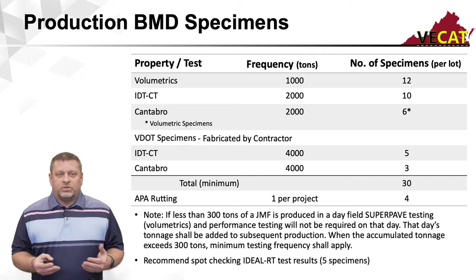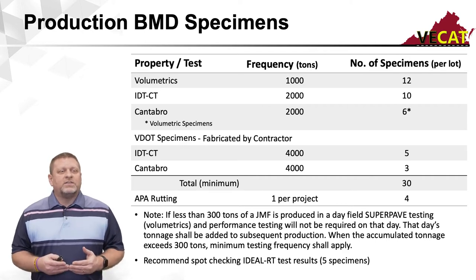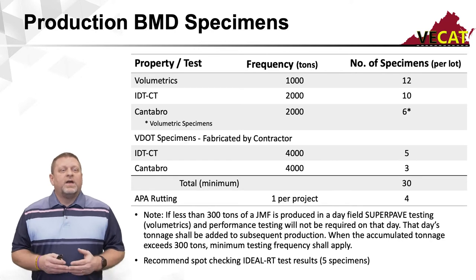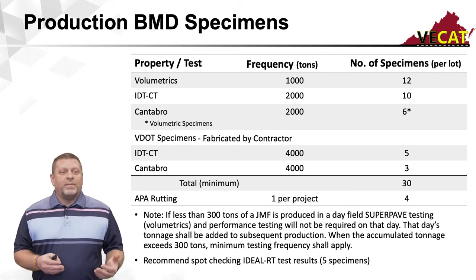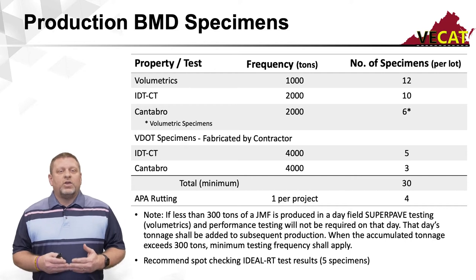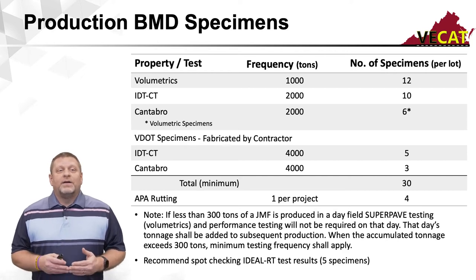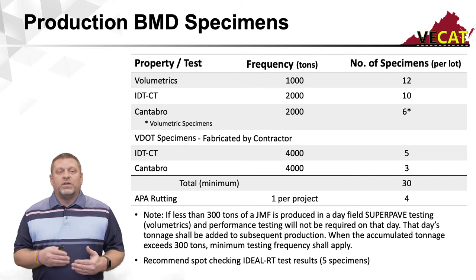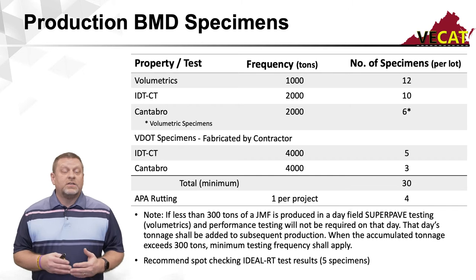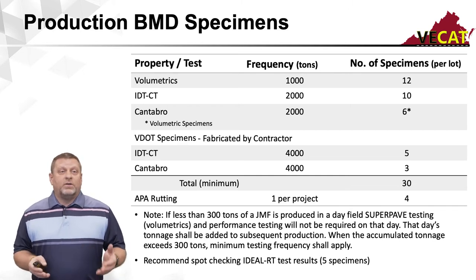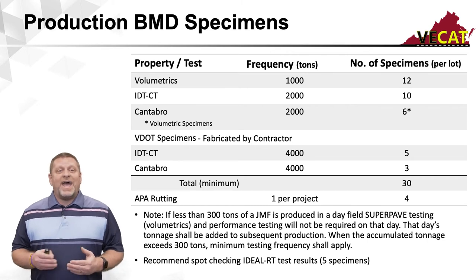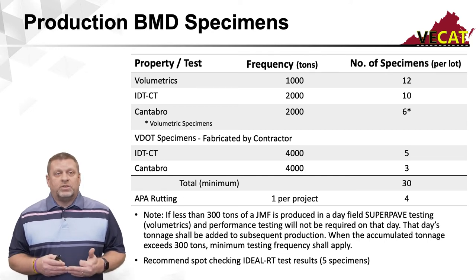Note: if less than 300 tons of a JMF — job mix formula — is produced in a day, field Superpave testing (volumetrics) and performance testing will not be required that day. That day's tonnage shall be added to subsequent production. When the accumulated tonnage exceeds 300 tons, minimum testing frequency shall apply. So if you're only doing 300 tons one day and 300 the next, that's 600 combined — you're over the limit and testing is required. Smaller quantity production can result in a higher frequency of testing than the stated minimums.